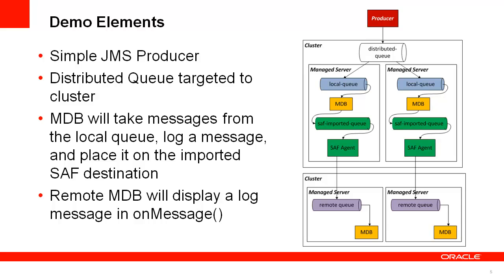I wanted to describe some of the elements I'm using for this demo. First, there's a simple Java JMS producer client which I'm going to run from the command line. This producer will send messages to a distributed queue that is targeted to the cluster — the AppGrade cluster. I have an MDB also targeted to the cluster, which will take the messages off of the local queue, display a log message, and then put them on the Store and Forward imported queue. I'm just doing this for demo purposes; it's not required to have this architecture when using Store and Forward.